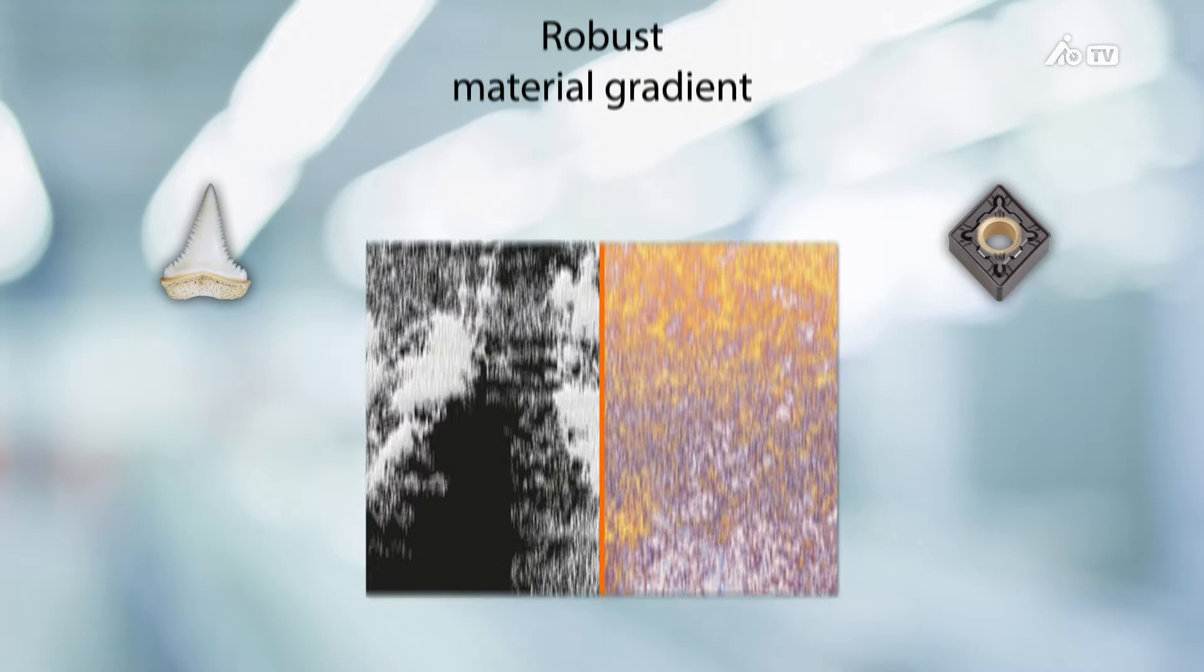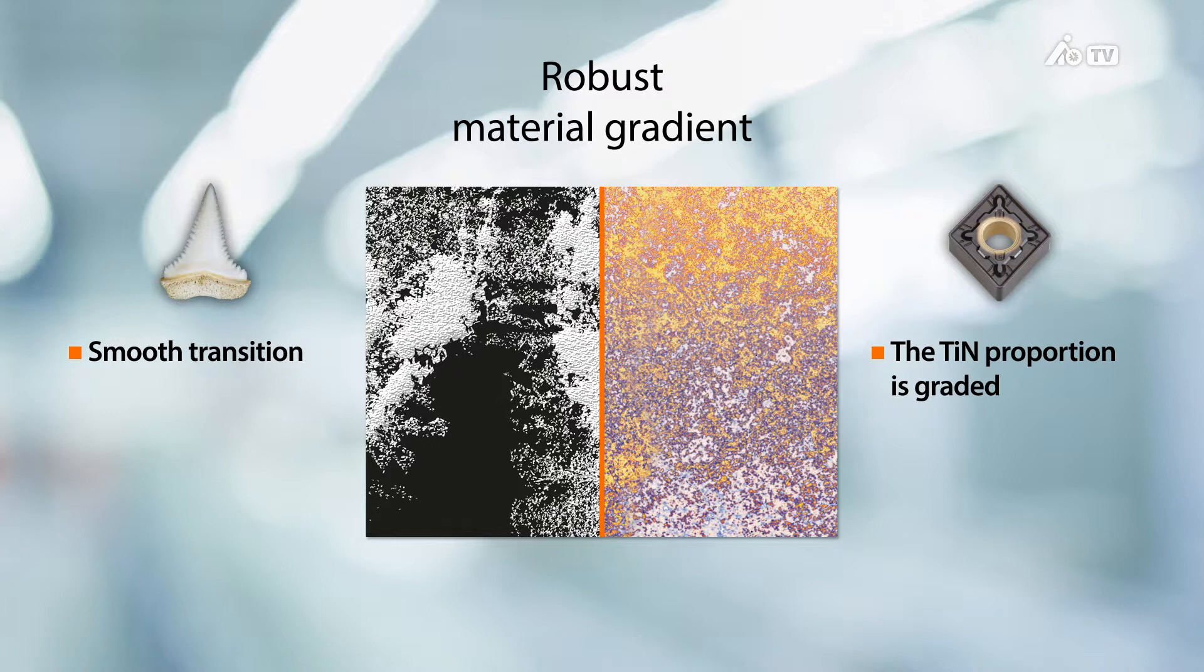And lastly, the robust gradient carbide. The increased proportion of titanium nitride in the surface zone of the carbide substrate significantly improves the bonding characteristics between the substrate and multilayer coating. This prevents or delays flaking and chipping.